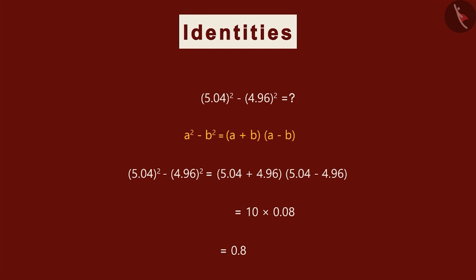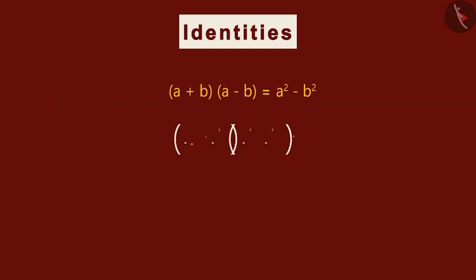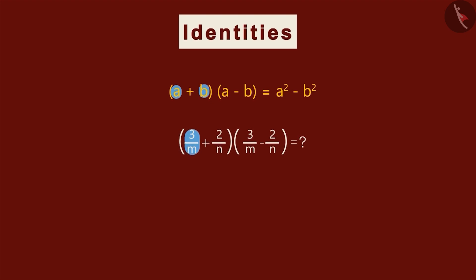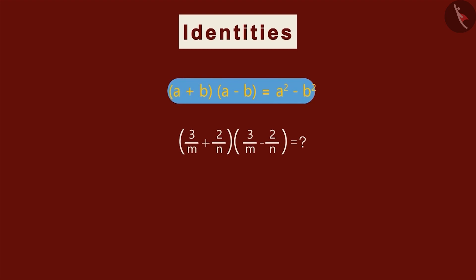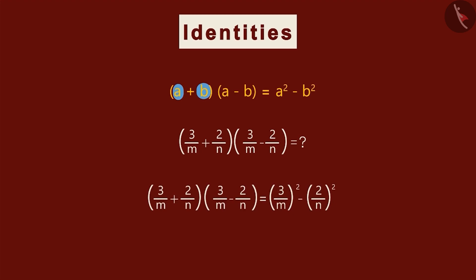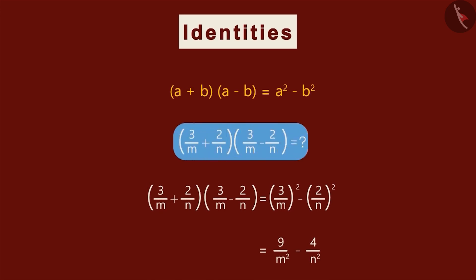Let us look at the next example. Can you find the answer to this? We can see that this expression is in this form. Here, a is 3 by m and b is 2 by n. We know that similar questions can be solved using this identity. So, by substituting the values of a and b, we get this. Simplifying it further, we get this as the final answer. This way, we can even solve similar expressions using this identity.